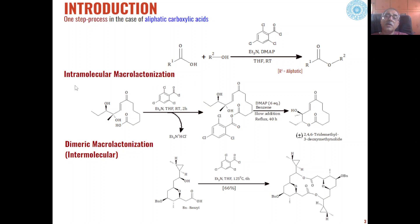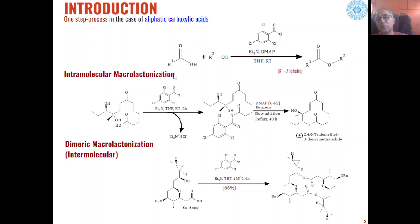Similarly, if within the same molecule we are having both functional groups — carboxylic acid and alcohol — present within the same starting material, then intramolecular macrolactonization can take place under Yamaguchi conditions and we can get large ring lactones as the product.